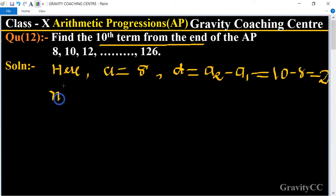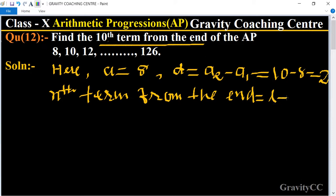The nth term from the end—its formula is l (last term) minus (n minus 1) times d.